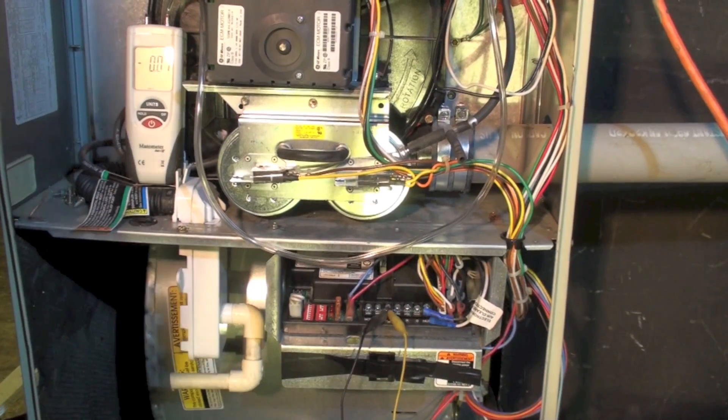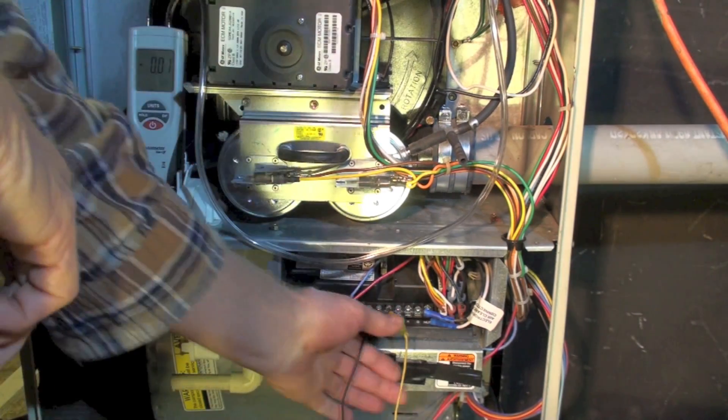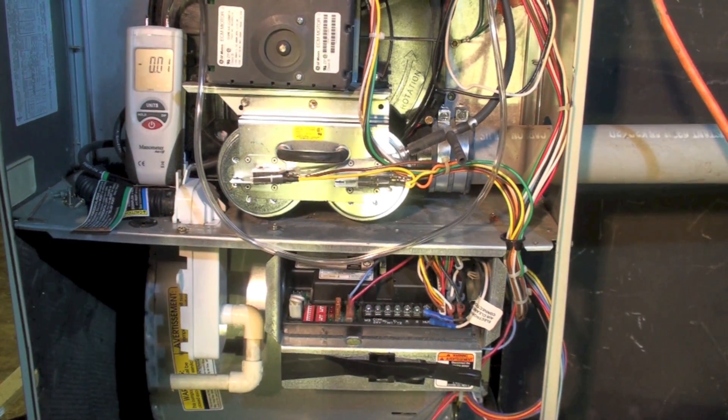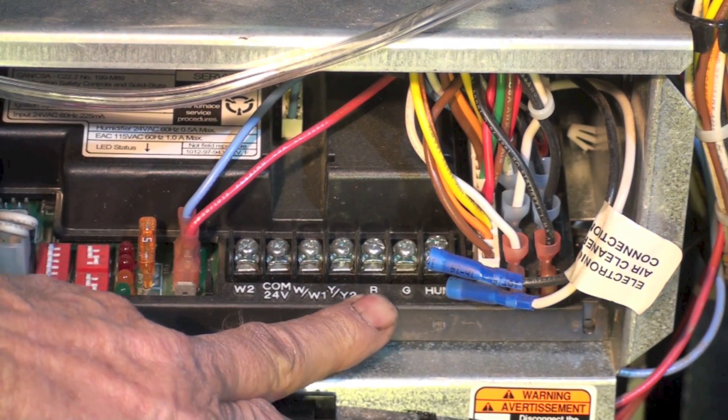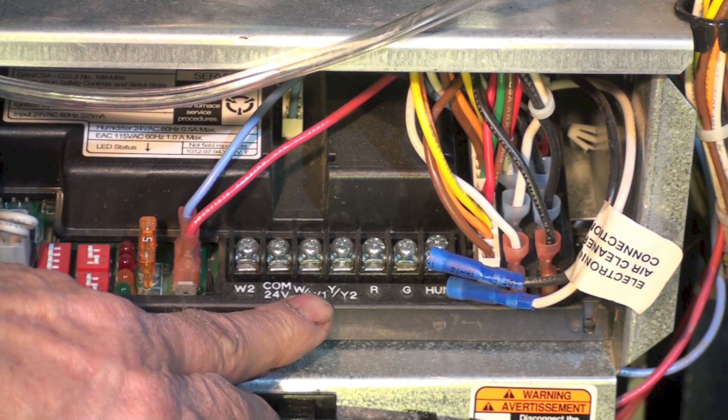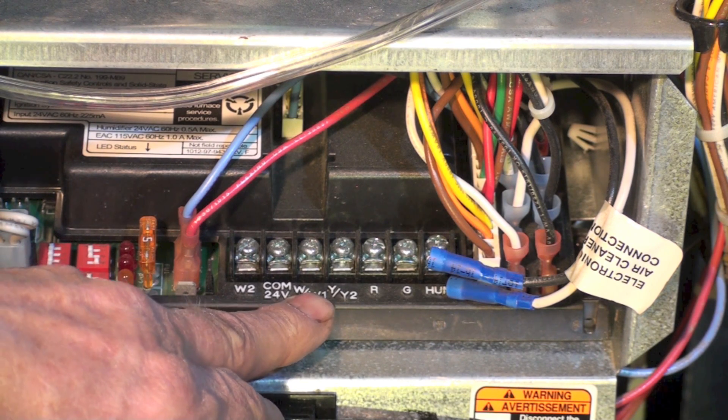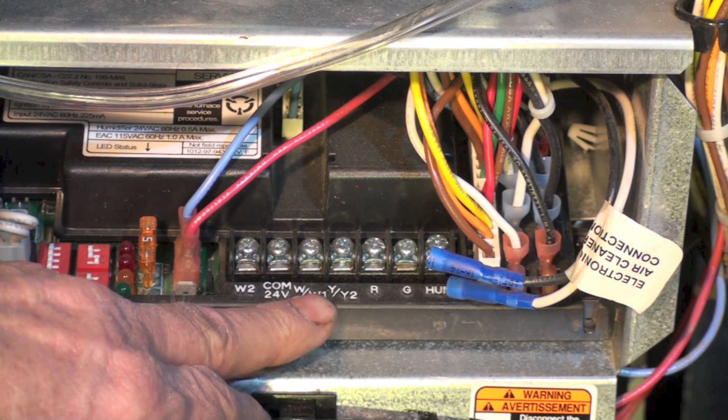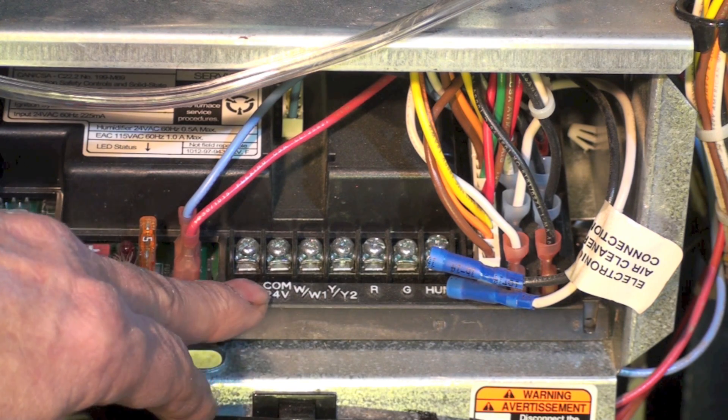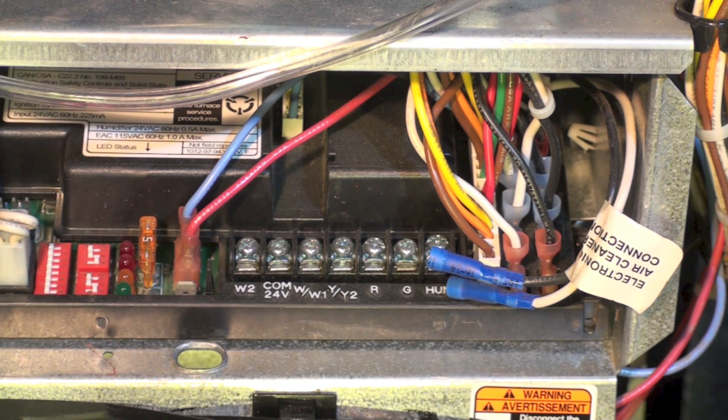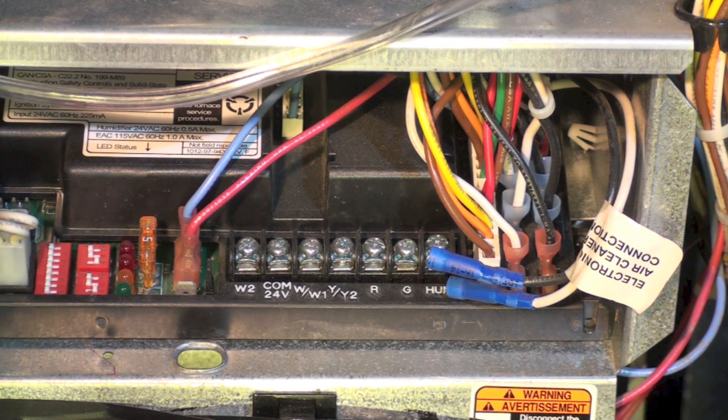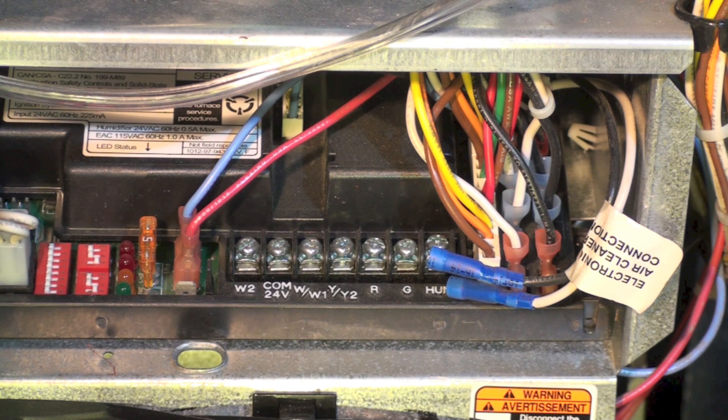Now the reason I didn't go ahead and jumper—let's get a close look at that. Originally I jumpered from R here to W/W1, that gave me low fire. If I wanted to have high fire, I would go to W2 in addition to W1. The only reason I didn't do that is there's a time delay. This thing is set up so that if you are running a single-stage thermostat that does not have a W1 and a W2 on it, then what it's going to do...